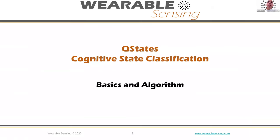We're going to cover the basics and depths of the algorithms. I should mention that I'm focusing on Q-State, which is the software and algorithms developed here at Wearable Sensing and at Quasar, and implemented at Wearable Sensing. Those are not the only solutions — it's not the only way to do cognitive state classification. I'm presenting this as one methodology as an example, not claiming it is the best.